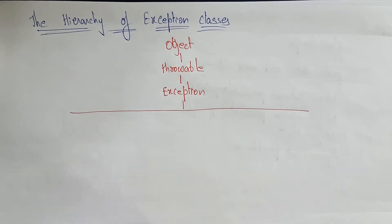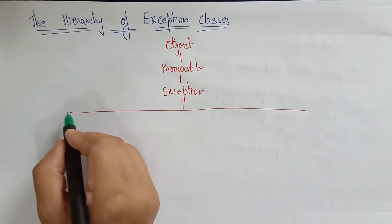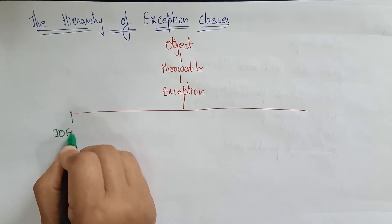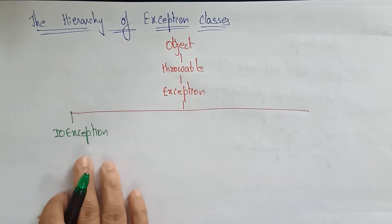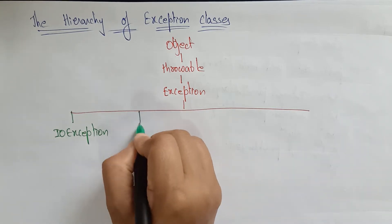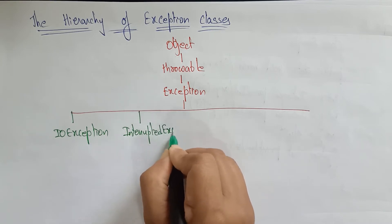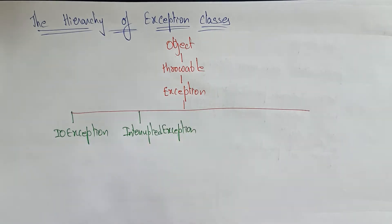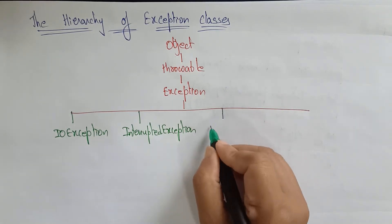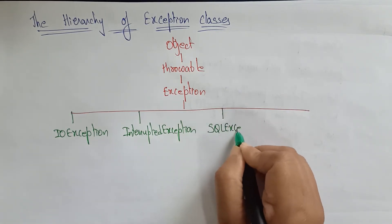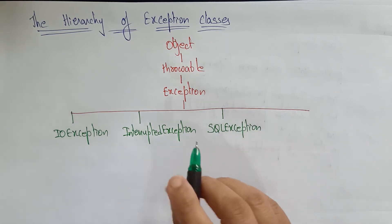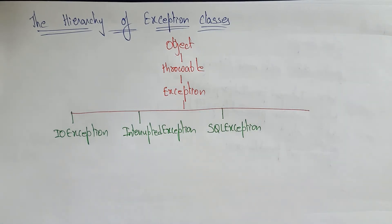I am writing only a sample — only two to three exceptions here, but thousands of exceptions are there in Java. Here I am writing IOException. If any input-output error is occurred, this IOException is raised. And interrupted exception — if any third party is entering into the data, some interrupted exception is occurred. SQL exception is occurred whenever query-related or database-related errors are occurred, then SQL exception is raised.